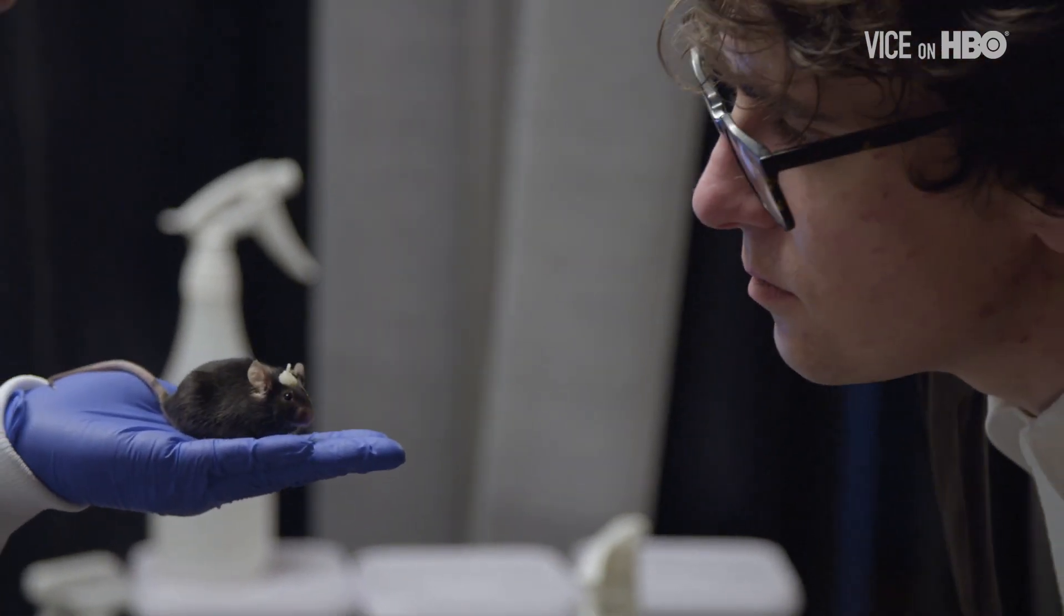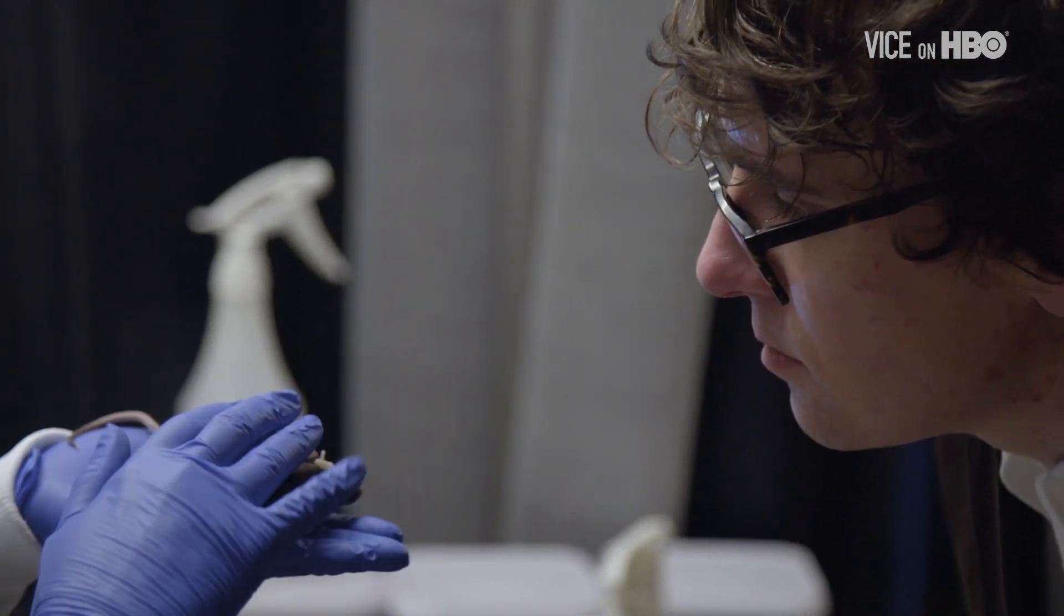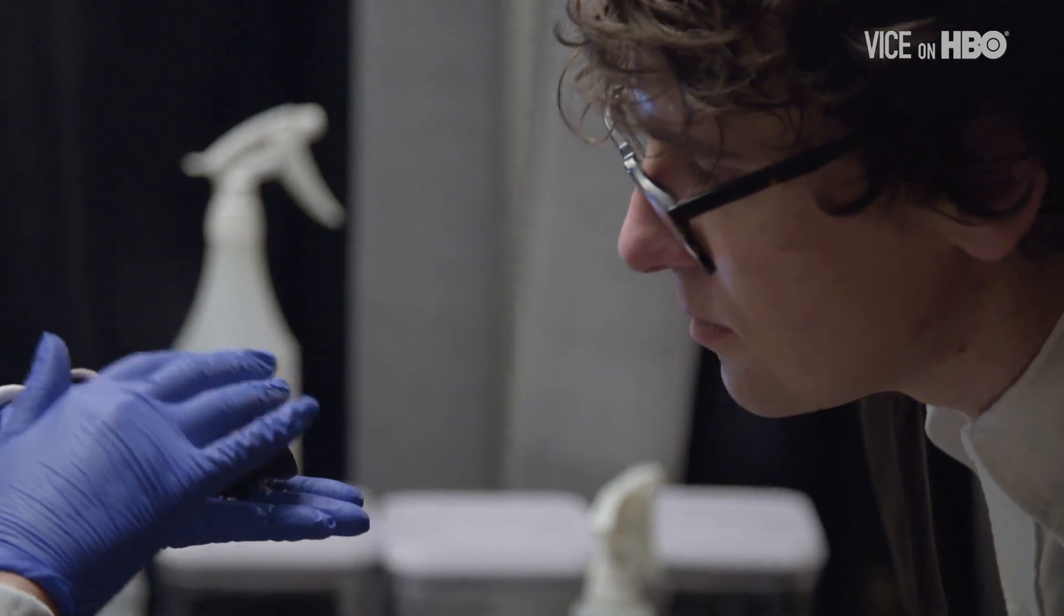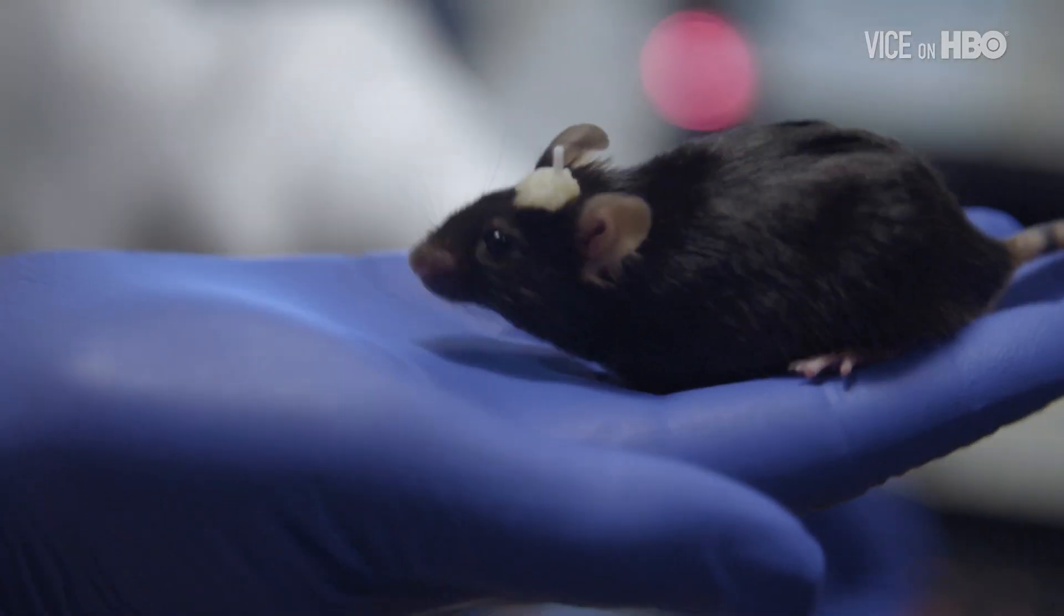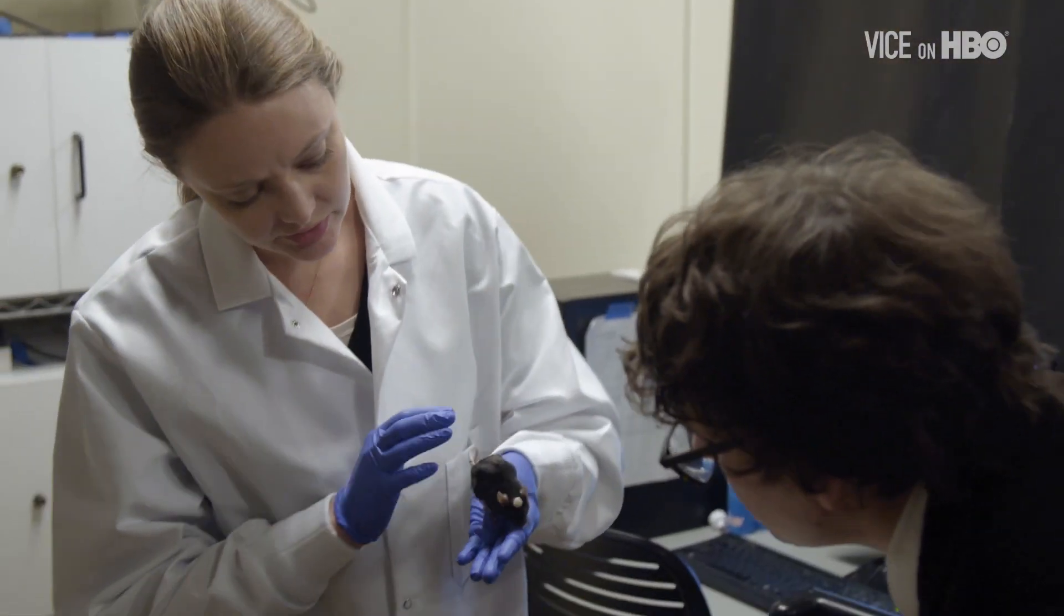He's a transgenic mouse, and so he's had a surgery that makes his dopamine neurons sensitive to light. And then I implanted a little fiber optic cannula, and that's what you see sticking out of his head. The white stuff is just some glue.